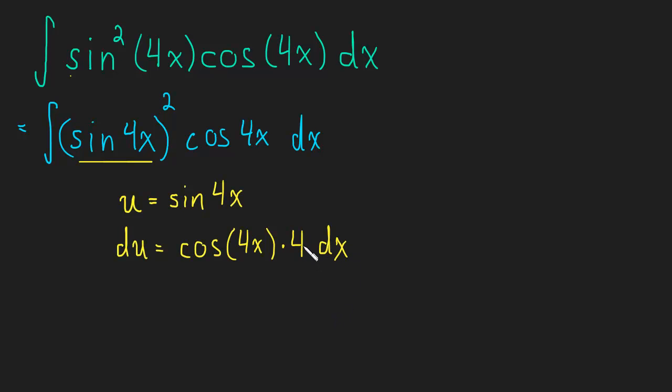But we didn't want 4 times the cosine of 4x dx. We wanted just simply cosine of 4x dx. So we'll divide by 4 on both sides, and we'll get 1 fourth du is equal to cos of 4x dx. And now we have all of our pieces, we can make our substitution.